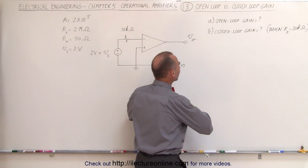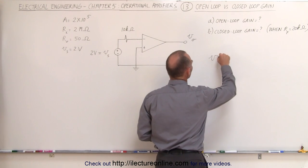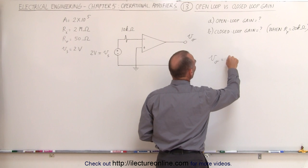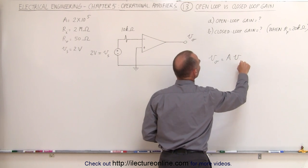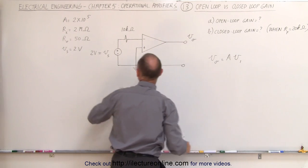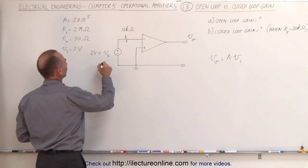Now we have to remember from the previous videos that the output voltage is going to be equal to the open loop gain times the input voltage. In this case let's call it V1 which is going to be the source voltage.